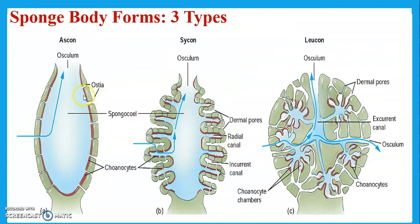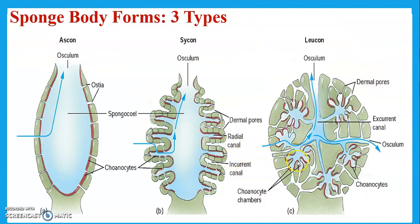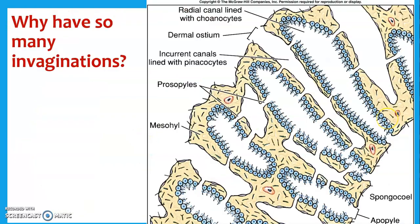Phagocytosis is how they digest their food. With body plans, you can see an evolution of complexity. Here's water coming in and being spit back out. If it's coming in this way, it has to take more time — that's the point of having all these invaginations. If the water is slower, it has to take more time getting through this quote-unquote digestive system. That's more opportunity for the sponge to actually pick out and get food — it kind of slows it all down. You can see early evolution versus more evolved forms of sponges.